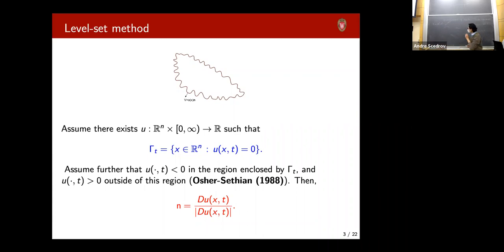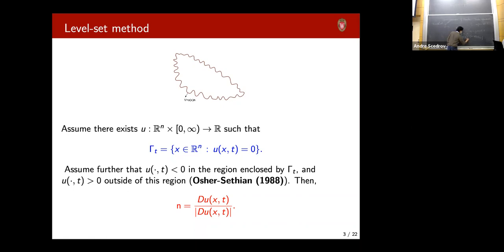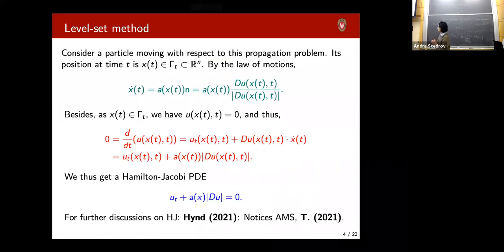One key point of the level set method is just how to compute the normal vector — and this is what we teach students in multivariable calculus. The gradient is set so that the direction of the normal vector is the direction where the function increases the most. So at a point y, the normal vector is nothing but the gradient of u divided by the norm of the gradient of u. We can compute the normal vector because u increases from negative to positive — that's the key point.